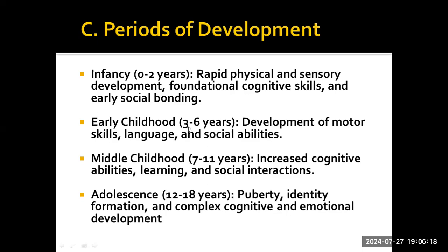Early childhood, from 3 to 6 years, is marked by the development of motor skills, language, and social abilities. Children in this stage refine their gross and fine motor skills, enabling activities like running, drawing, and using utensils. Language development accelerates, with children expanding their vocabulary and grasping grammar, facilitating more complex communication. Socially, they begin to form friendships, understand social norms, and develop empathy. This period is also crucial for imaginative play, which supports cognitive development and problem-solving skills. Early childhood lays a foundation for academic learning and social competence.